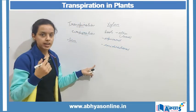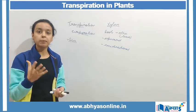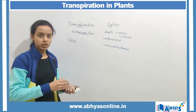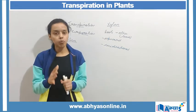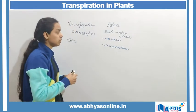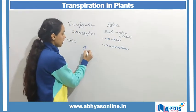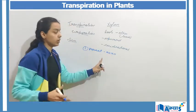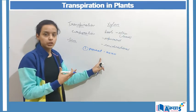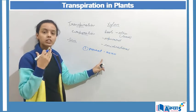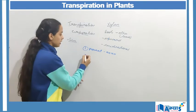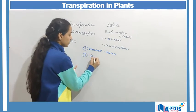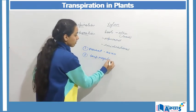Now that we've discussed how water enters and exits the plant via transpiration, let's look at the important functions of transpiration. The first function is the movement or release of excess water, which is removed through evaporation from the surface of the leaves or the stem.